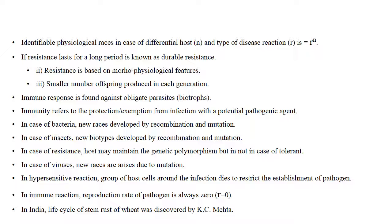In a hypersensitive reaction, the group of host cells around the infection point dies to restrict the establishment of the pathogen. In an immune reaction, the reproduction rate of the pathogen is always zero. In India, the life cycle of stem rust of wheat was described by K.C. Mehta.